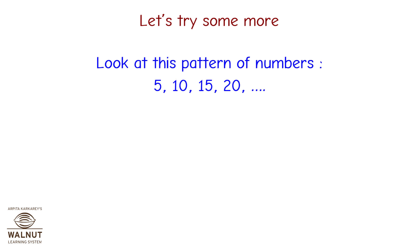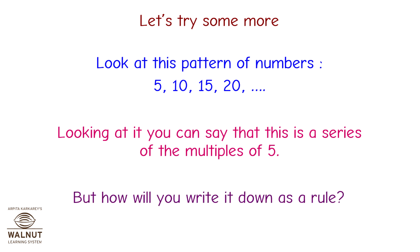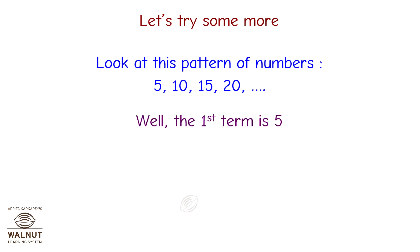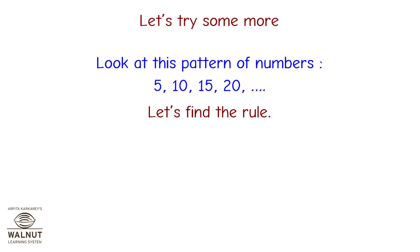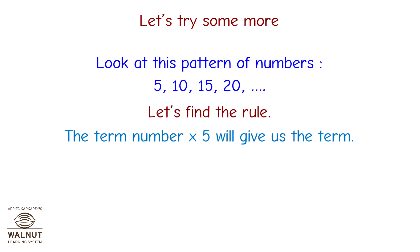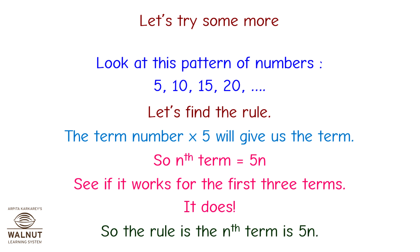Look at this pattern of numbers: 5, 10, 15, 20 and so on. You can say that this is a series of multiples of 5. The first term is 5, the second term is 10, the third term is 15, so the tenth term is 50. The term number multiplied by 5 gives us the term. So the nth term is equal to 5n. Check it for the first three terms — it works! So the rule is: the nth term is 5n.